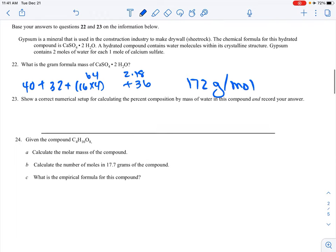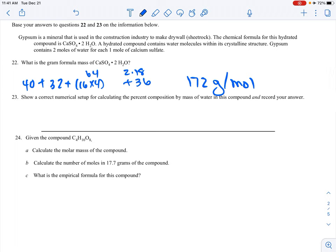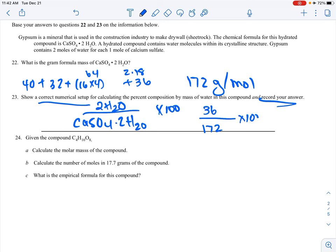Show a correct numerical setup for calculating percent composition by mass of water, and record your answer. If it was just correct numerical setup, I wouldn't include the answer, but I have to this time. It would be the mass of 2H2O, that's our part. CaSO4·2H2O would be the bottom times 100. I already know the GFM of the whole thing is 172. I know the mass of the water is 2 times 18, that's 36, times 100. 36 divided by 172 times 100 gives me 20.9, so 21%. Didn't ask for sig figs.